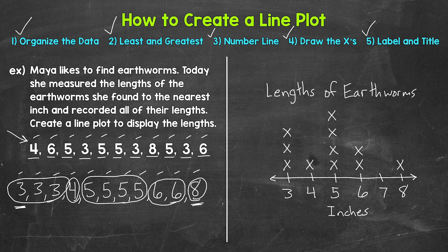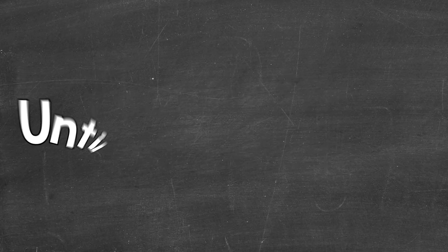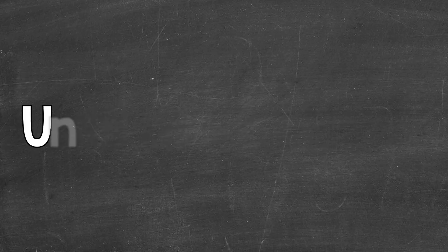That's our completed line plot. Notice all of the X's are basically the same size, the stacks are straight, and the X's are lined up with each other as you look across. Try your best to be as neat as possible. There's how to read and understand a line plot, and also how to create one. I hope that helped — thanks so much for watching. Until next time, peace.